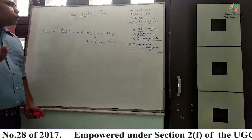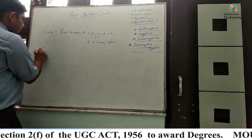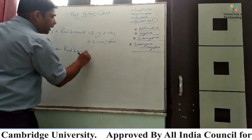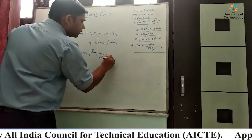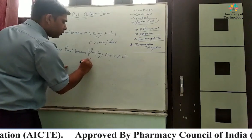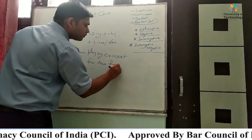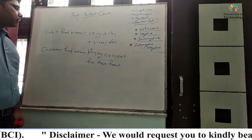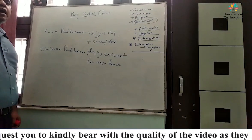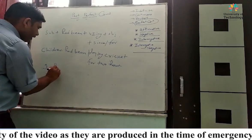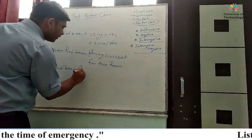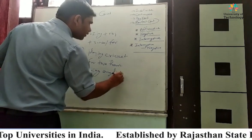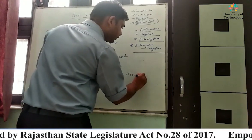Another example: 'Main 1990 se English seekh raha tha' — I had been learning English since 1990. So in past perfect continuous we use 'had been' with verb -ing form, and we use 'since' for a point in time and 'for' for a duration.